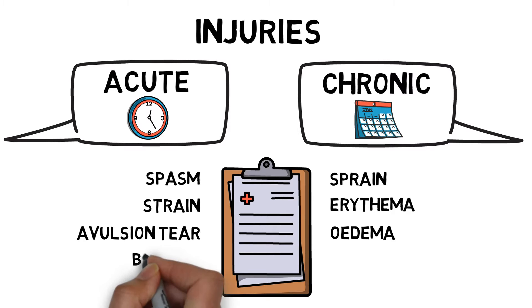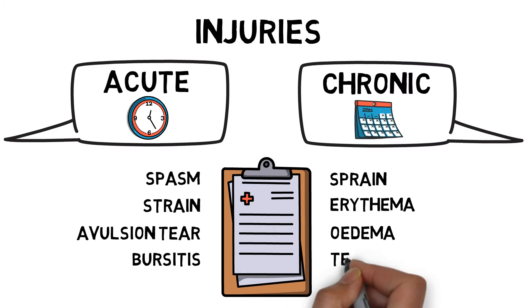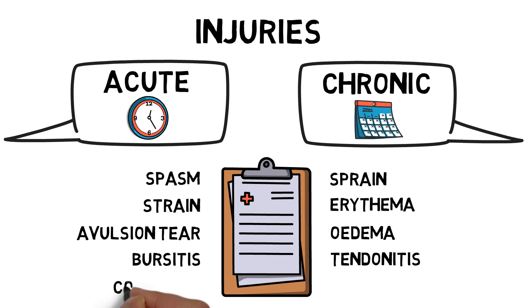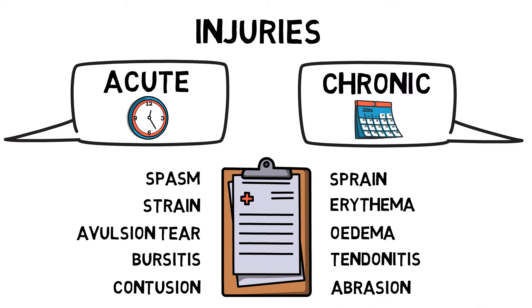Bursitis is inflammation or irritation of a bursa — small sacs of fluid located between bones, muscles, skin or tendons. Tendonitis is an inflammation or irritation of a tendon. A contusion is the technical name for a bruise. And an abrasion is when the top layer of skin becomes grazed or removed.